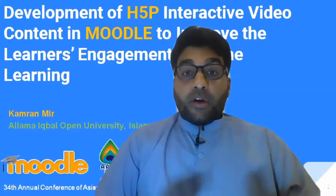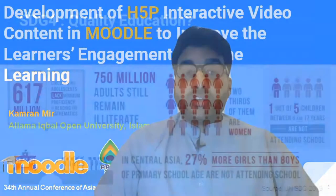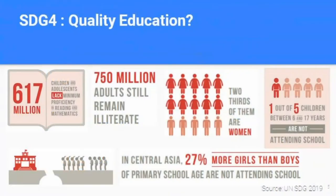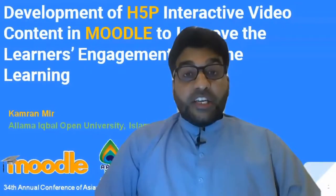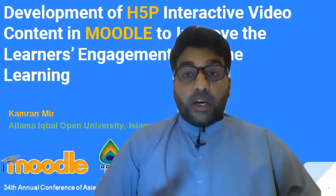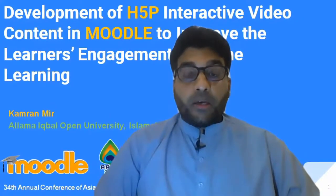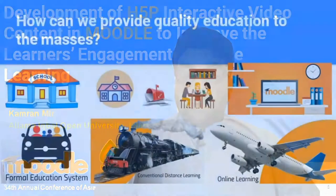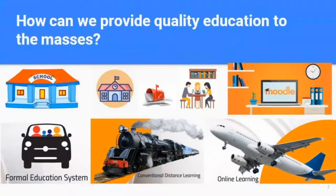There are 617 million children who lack the minimum proficiency in reading and mathematics, and around 750 million adults still remain illiterate. These facts tell us there is a need to change the mode of education so that we can provide quality education to the masses.